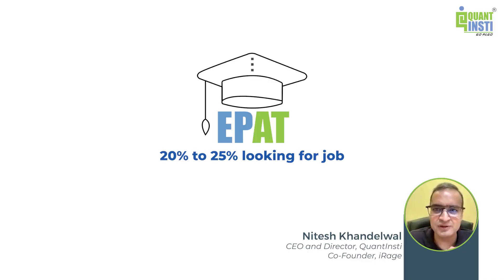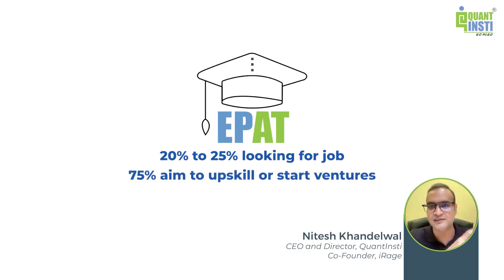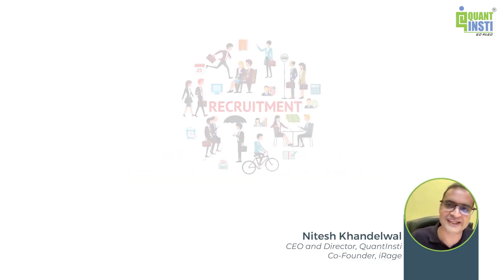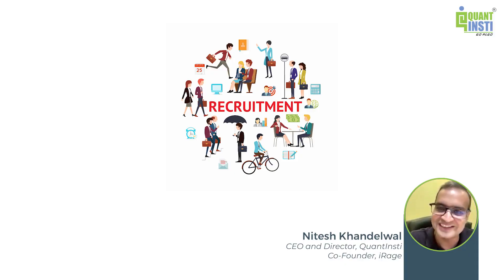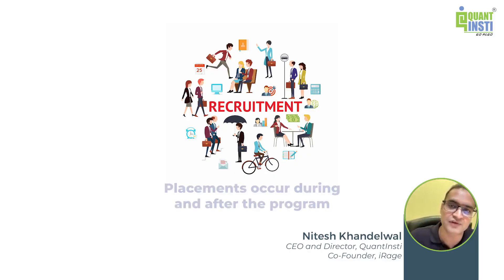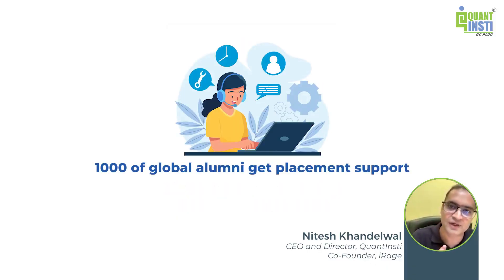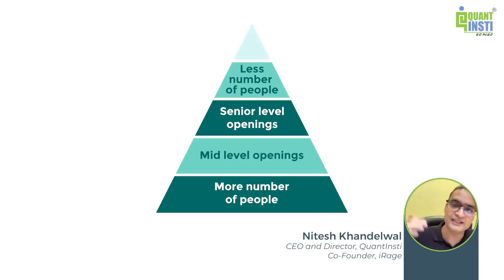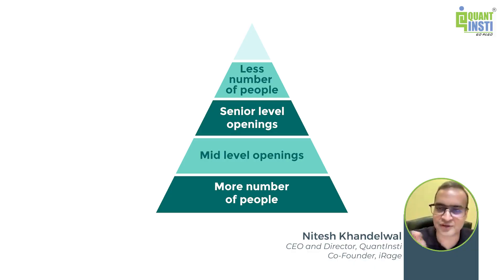About 25 to 27 percent of people who enroll in EPAT are looking for jobs; 75 percent are upskilling, setting up their own trading desk, or launching a business venture. For those seeking jobs, we have a dedicated placement cell — a sized-up team that connects with institutions globally, gathers openings, and shares them with relevant people from the alumni pool. This support continues after the program. You'll see more entry and mid-level openings than senior ones, which reflects how the industry composition is.